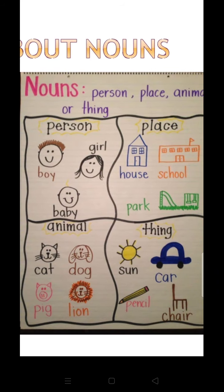Now, animals — so many animals you know, wild animals and pet animals — they can be classified under the category of nouns. Cat, dog, pig, lion — these all are nouns. Things like sun, stars, pen, pencil, table, chair, car — these all are also nouns.